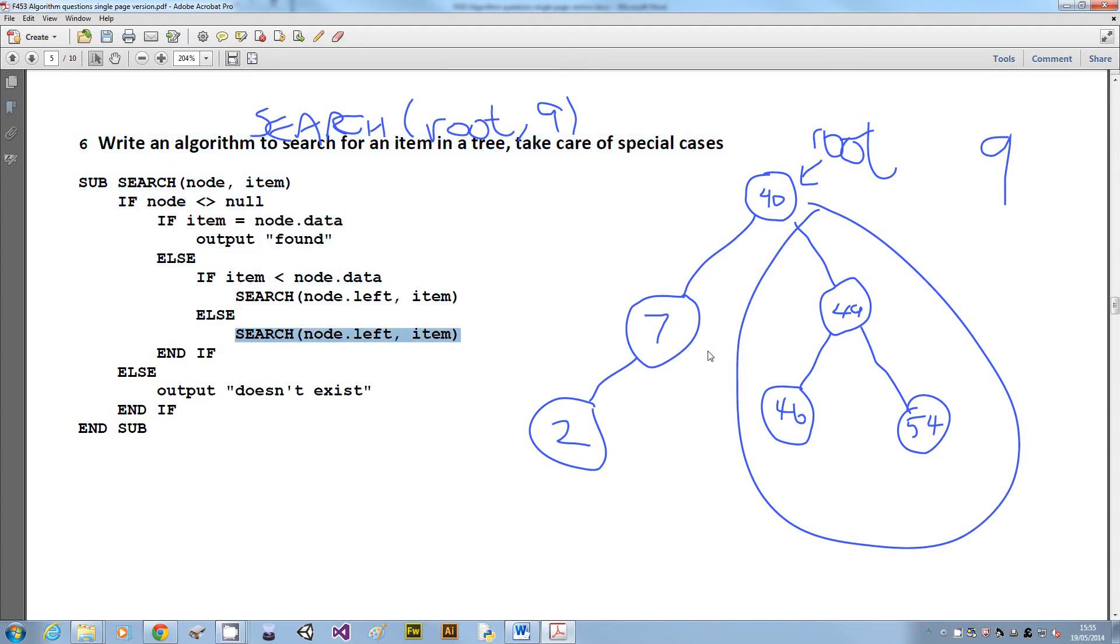So we recurse with that, though I've put left there. I made a mistake. Oh dear, never spotted that when I was writing it. Scribble that out. That should say right. I'll change it on the document, but for now I'll just put node.right. Now that looks like node.site actually.